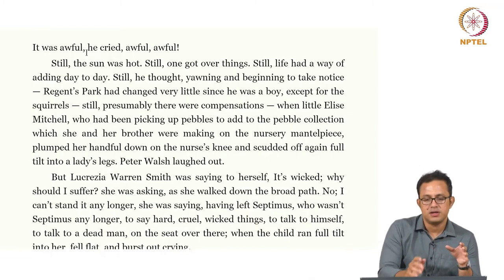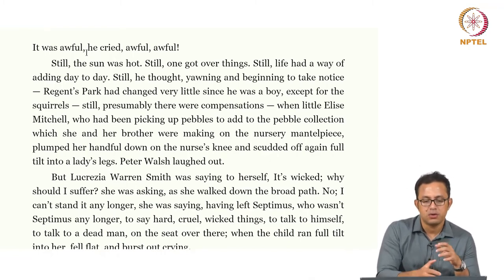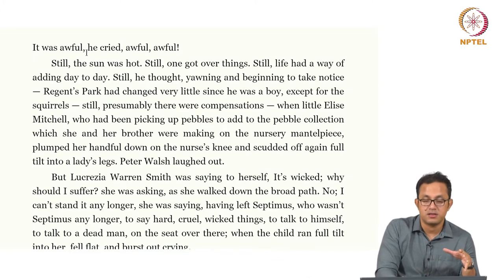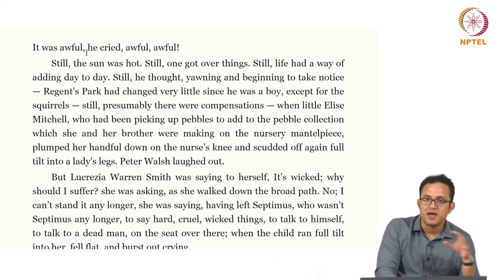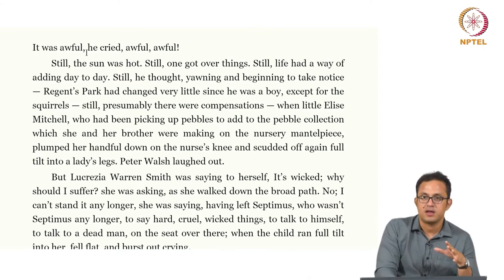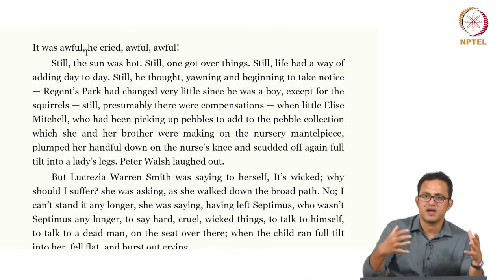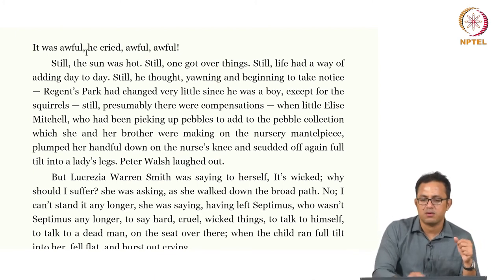Now we move to another section focusing on Lucrezia and Septimus, looking at the other kind of alienation they face. We have already spoken about how Lucrezia Smith, who is Italian, feels like an outsider in London, and Septimus is also an outsider because of his trauma. So we see different degrees of outsiderness being experienced across this metropolis.